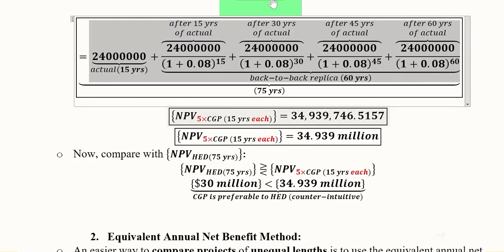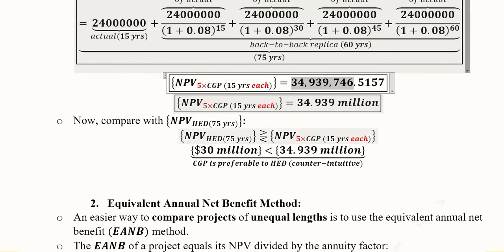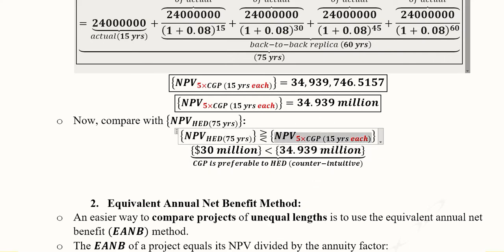The calculation gives a total NPV for the co-generation plant with replicas, expressed in millions. We can now compare this NPV of the CGP with the hydroelectric dam's NPV of $30 million. The CGP with the rolling over method gives $34.939 million. This means that if we allow the CGP to be repeated for the same number of years, it becomes more beneficial than the hydroelectric dam. So CGP is now found to be preferable to the hydroelectric dam — counter-intuitive, but correct.